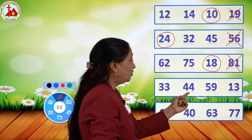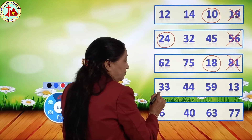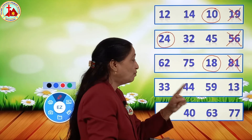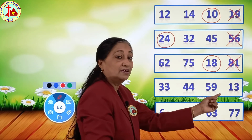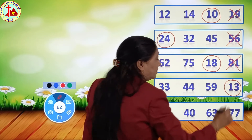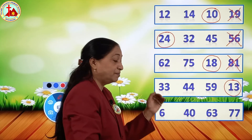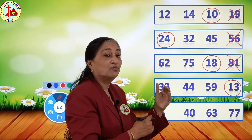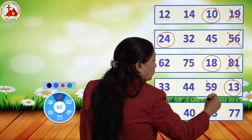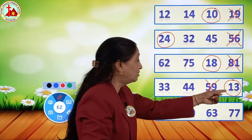Now the next: 33, 44, 59 and 13. Here also all the first digits are different, so we see the first digit: 3, 4, 5 and 1. Which number is small - which comes first? Number 1. With 1, which number is there? Number 13. So number 13 is the smaller one - we circle number 13. Now among 3, 4 and 5, which is biggest? We say 3, then 4, then 5 - so 5 is the biggest. So 59 is the biggest among all these numbers and we put a cross on it.